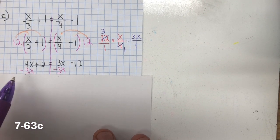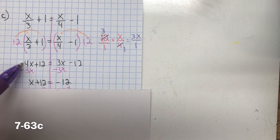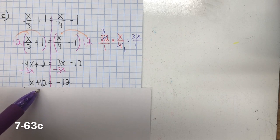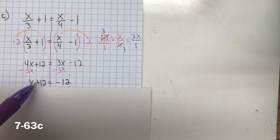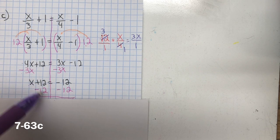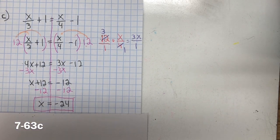Subtract 3x from both sides, that creates a zero pair. 4x minus 3x is x. Now we're going to subtract 12 from both sides, inverse property of addition and subtraction, created a zero pair. And negative 12 and negative 12 is negative 24.